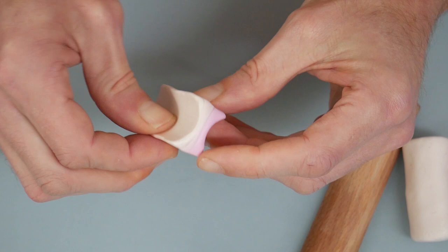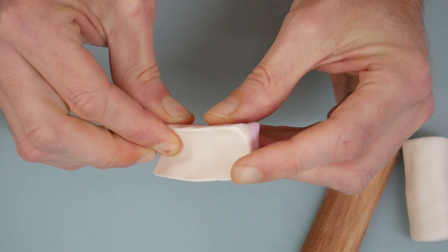Shape it a bit more by hand - pull these edges out and make them really thin on both sides.